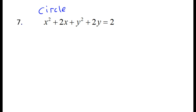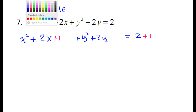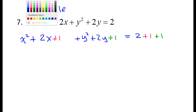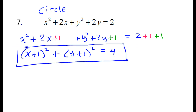We have another circle. I need to group my x terms and my y terms, but they are already grouped. So I have x squared plus 2x, plus y squared plus 2y, is equal to 2. Half of 2 is 1, 1 squared is 1, so I add 1 to the other side. Half of 2 is 1, 1 squared is 1, so I add 1 to the other side again. Factoring: x plus 1 squared, plus y plus 1 squared, equals 4. That is my standard form equation of the circle.